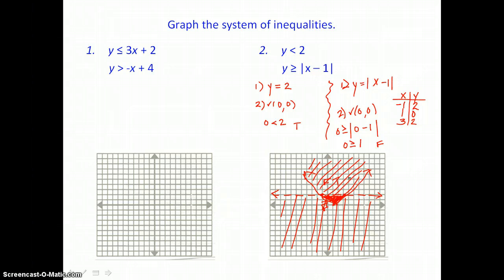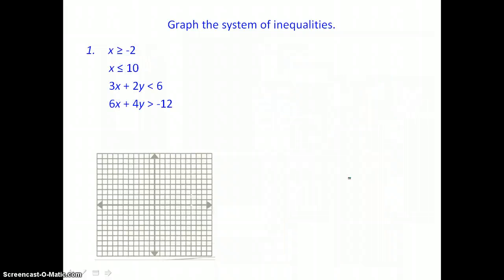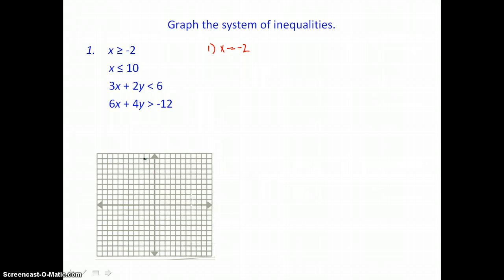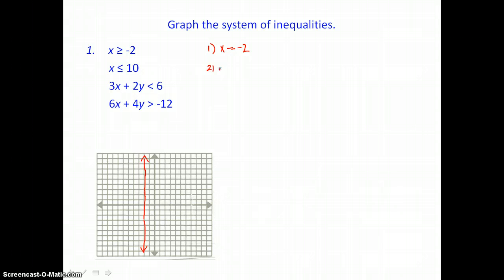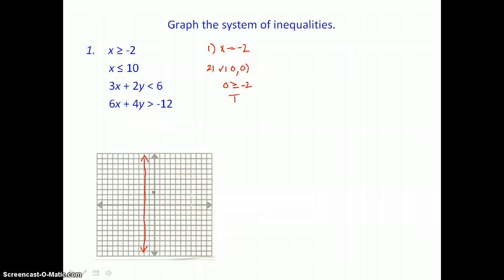It's a bounded region. Now in this next system, we're graphing four inequalities in the same coordinate plane, going through all the same steps. Graphing the first boundary: x equals negative 2, a vertical line crossing the x-axis at negative 2. It's solid because equals is part of the inequality. When I check for shading using the origin, I put 0 in for x. Is 0 greater than or equal to negative 2? That's true, so I'm shading to the right of that vertical line.